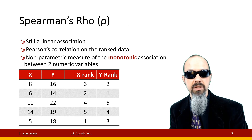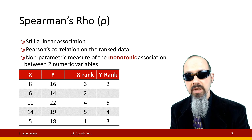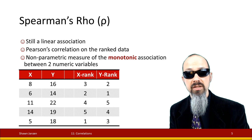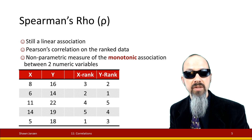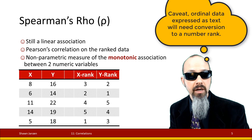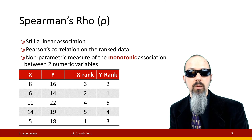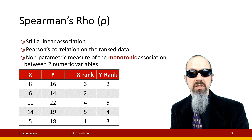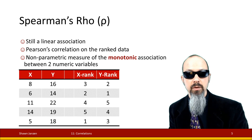Spearman's Rho is still a linear association and it does the same thing that Pearson's R does, but instead of doing it on the exact values, it changes it to ranked data. If the data is ordinal, it's already set in terms of ranking. If you're doing this on numeric or integer data, it's going to change it into ranks when it does its calculations. The way it works is we're doing a non-parametric measure on what we call the monotonic association between two numeric variables.